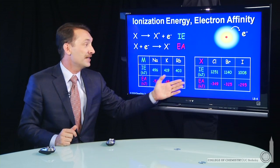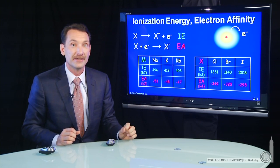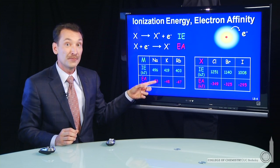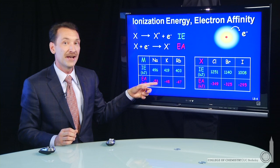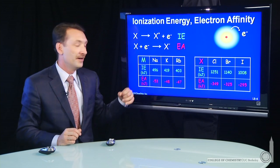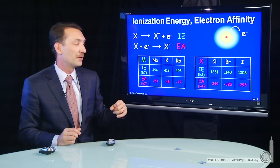For the electron affinities, there's the same general trend. That is, the electron affinity for sodium, sodium releases quite a bit of energy when you make it into sodium minus. It likes to accept that electron. 53 kilojoules per mole are released, where rubidium, only 47 kilojoules are released.